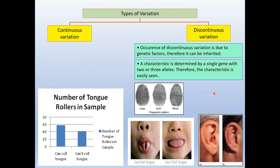Discontinuous variation can be inherited because it is determined by genetic factor. The characteristic is determined by a single gene with two or three alleles, therefore the characteristic is easily seen. Examples of discontinuous variations include ability to roll the tongue, fingerprint patterns, and type of ear lobes.